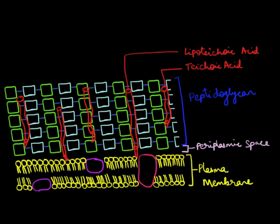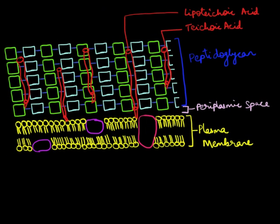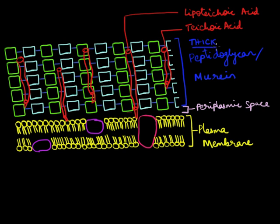Now let us look at the structure of a Gram positive bacterial cell wall. As you can see, this cell wall is made up of a thick peptidoglycan layer. This peptidoglycan layer is also called murein (M-U-R-E-I-N). When I say thick here in bacterial terms, it means only 20 to 80 nanometers.